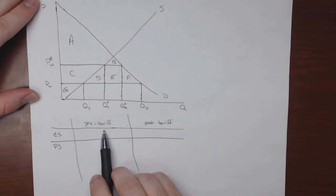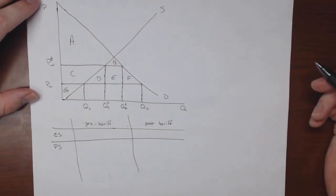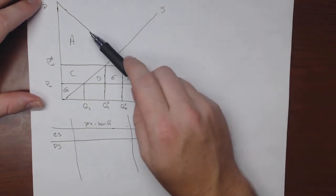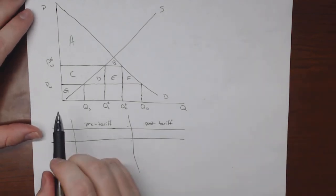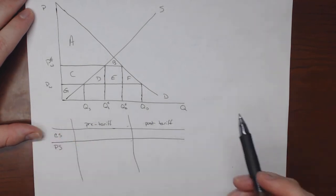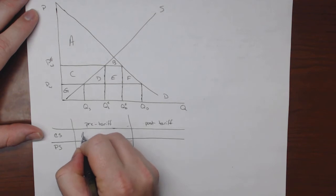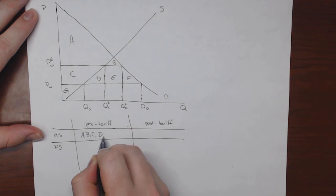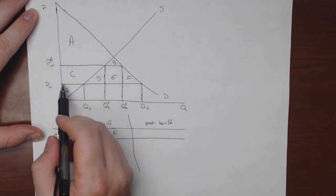So let's think about before the tariff, what shapes would represent the consumer surplus? So remember, consumer surplus is all the area below the demand curve and above the price that is being paid. So if there's no tariff, then domestic consumers are paying Pw. So the pre-tariff consumer surplus will be A, B, C, D, E, and F. It'll be this whole big triangle right here.